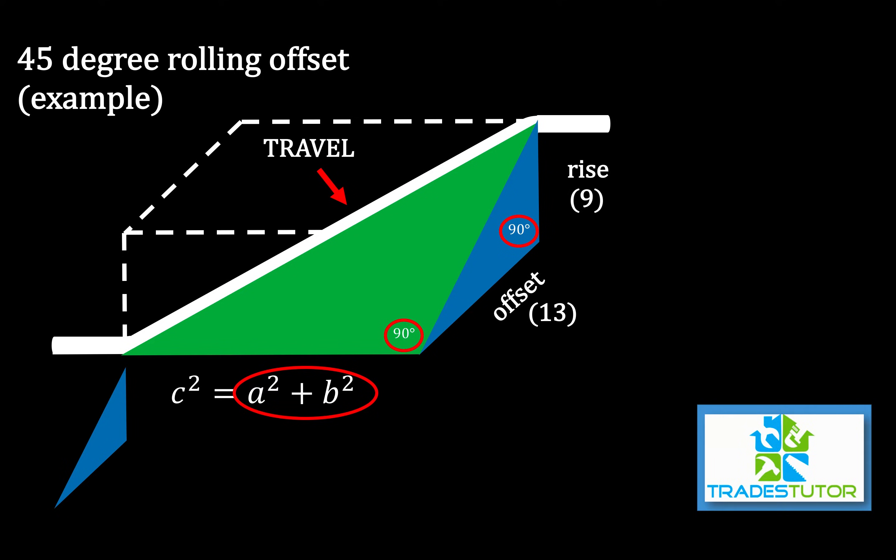And we'll say the offset is 13, the rise is 9. And what we're going to find is C right there. Plug in some numbers here. C squared is equal to 13 squared plus 9 squared. We're going to work that all around. And what we're going to get is C is the square root of 250 or 15.81. So C, that piece of pipe is 15.81.